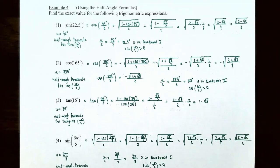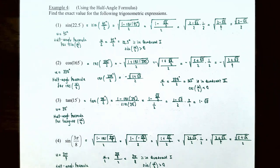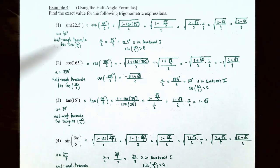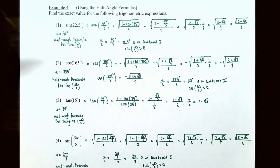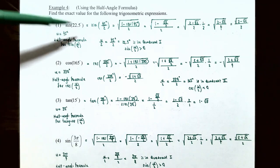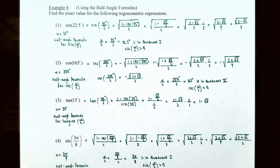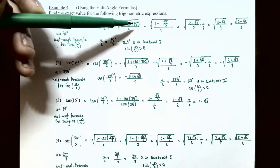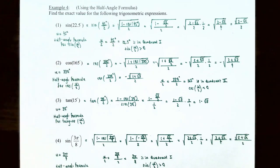Example 4, Number 1: find the exact value of sin(22.5°). Notice that 22.5° is half of 45°, so we rewrite it as sin(45°/2), where u = 45°. Since 22.5° is in quadrant 1 the sine function is positive, so we use the positive square root: sin(45°/2) = +√[(1 − cos 45°) / 2]. Cosine of 45° = √2/2, so the numerator of the fraction inside the square root is 1 − √2/2.